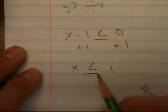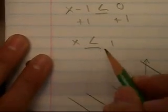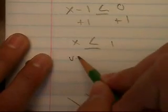x is less than or equal to zero, and you don't have to worry about switching the sign because you're not multiplying or dividing by a negative. So this is going to be a vertical line.